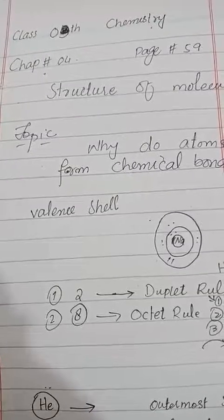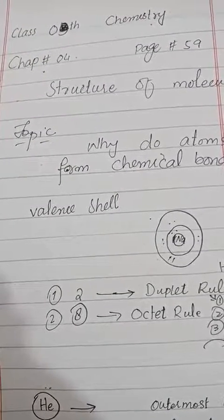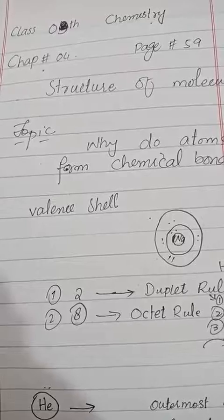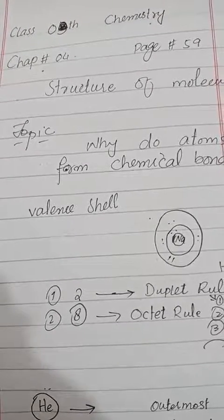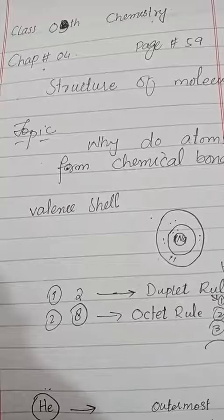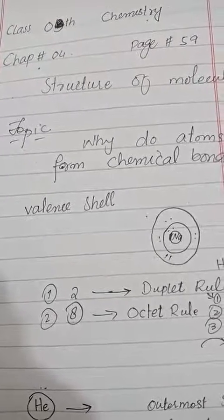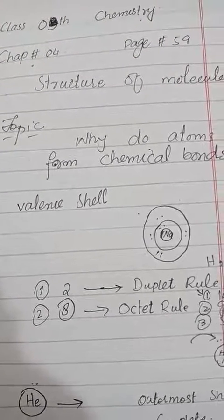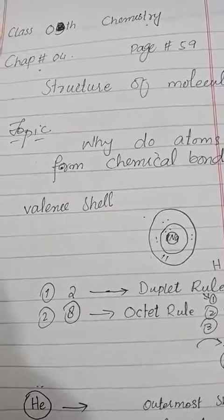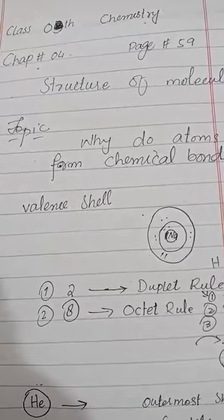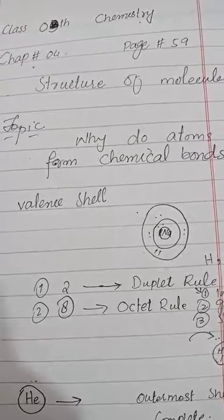Assalamu alaikum dear students, today is our 25th lecture of chemistry, class 9th, chapter number 4, page number 59. Our chapter name is 'Structure of Molecule' and our topic name is 'Why do atoms form chemical bonds?'